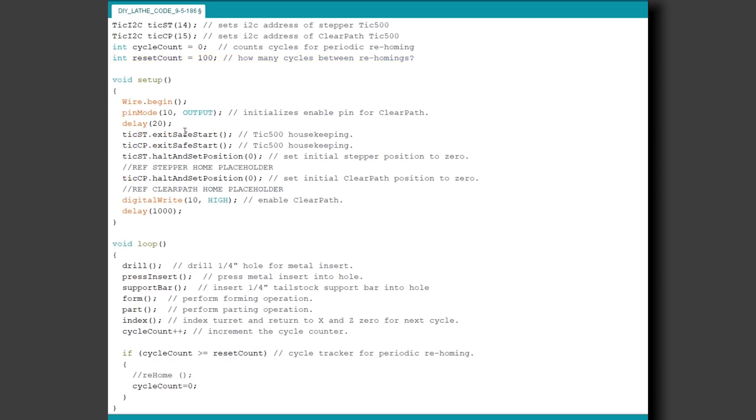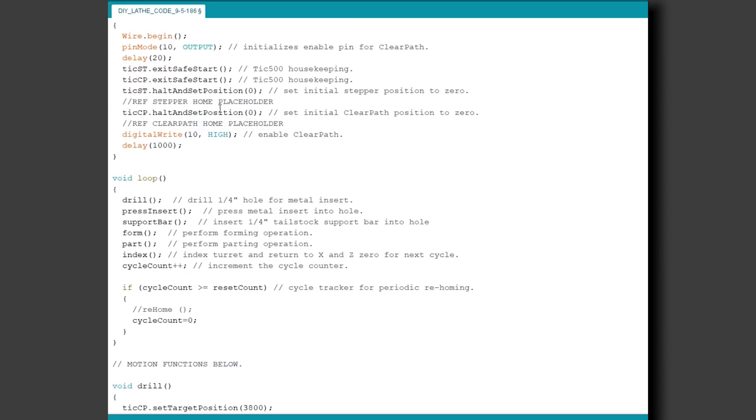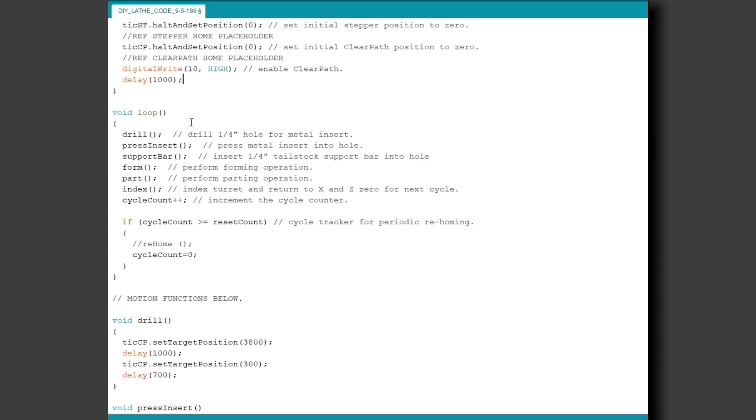Here we initialize pin 10 on the Arduino as an output. This is used to enable and disable the clear path. And here we set the initial position of both the stepper and the clear path to zero. And in the future, once I figure out the homing on this machine, we'll have reference-home functions here. Then we write that pin 10 high to enable the clear path and wait one second just to make sure all this has time to finish up before moving on to the main loop.